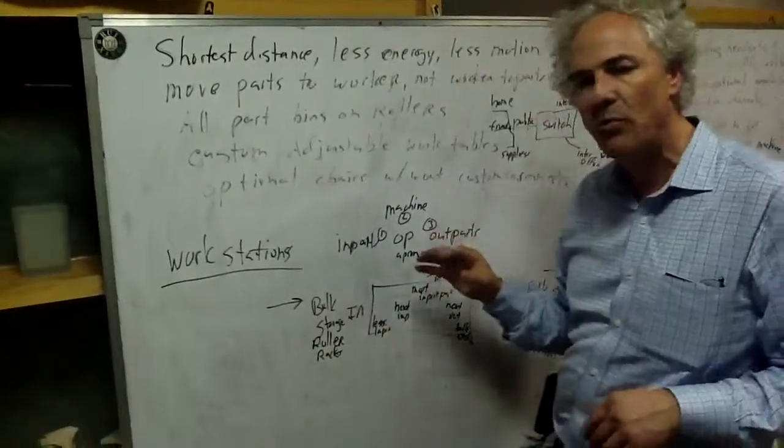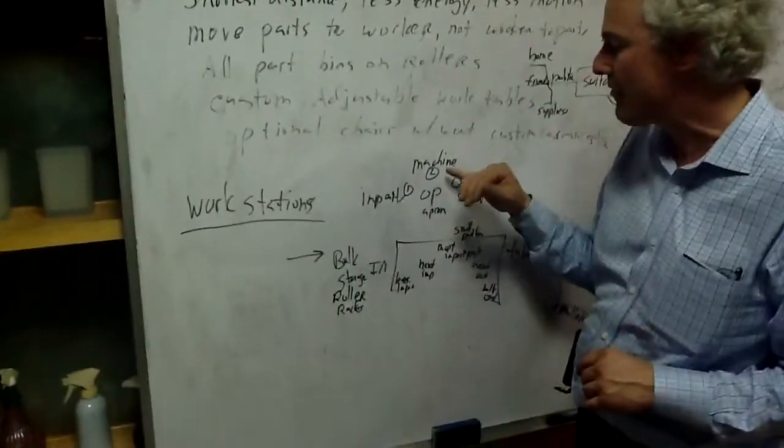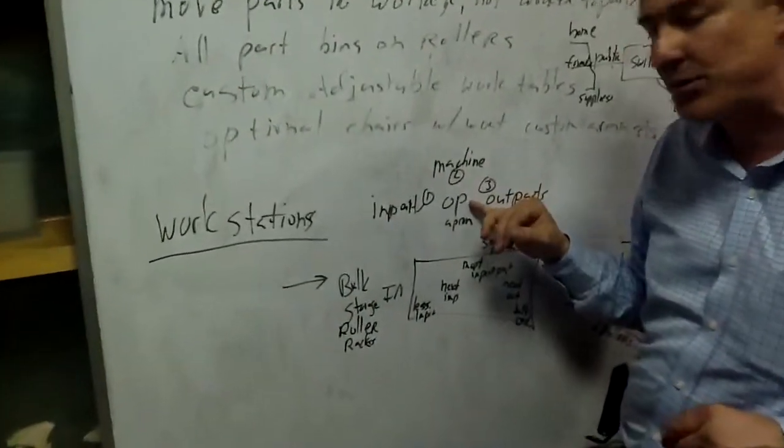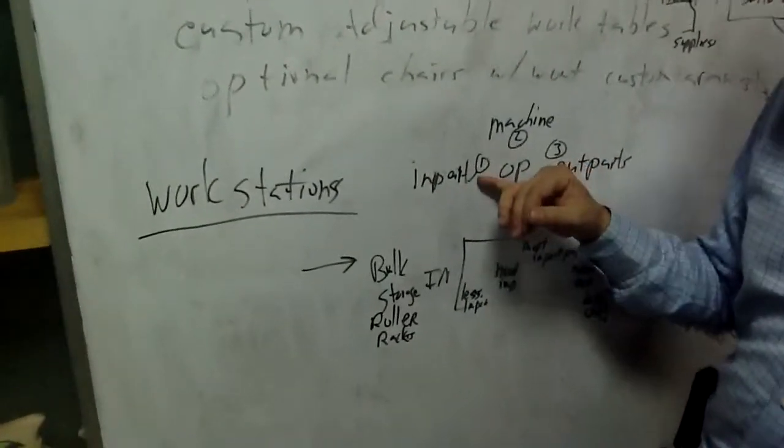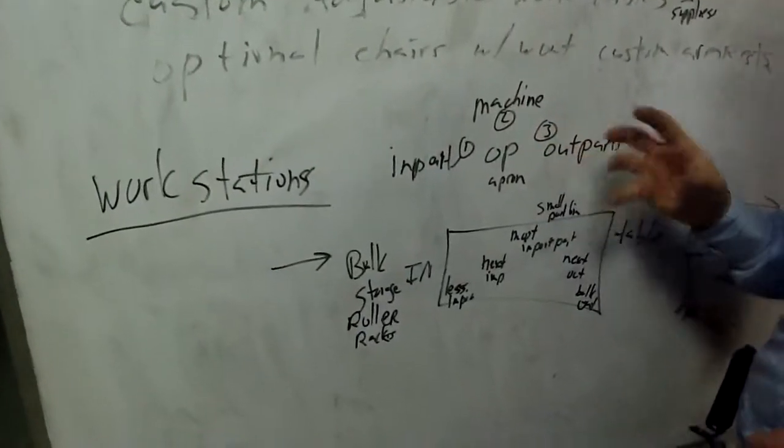Now on the workstations, the typical configuration is very simple. You have a machine that you're operating, the operator's in the center. The input part should be as close as possible to put the number one parts into the number two machine, and then three is the output bins.